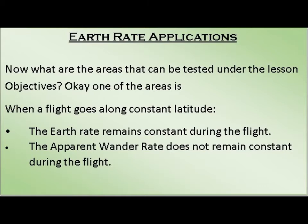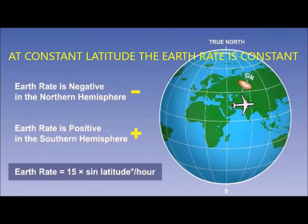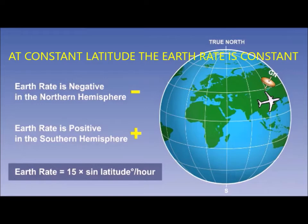Earth rate applications. One of the areas you can be tested on under the lesson objectives is when a flight goes along a constant latitude. The earth rate remains constant during the flight. The apparent wander rate does not remain constant. Although earth rate and transport wander occur at the same time, when we come to do calculations, we calculate the error for transport wander separately and add or subtract it to the equation for total wander.